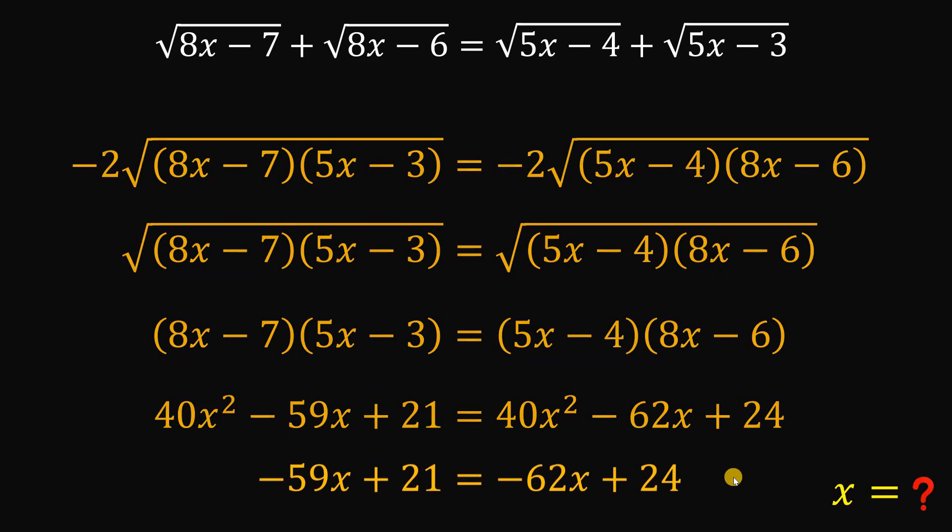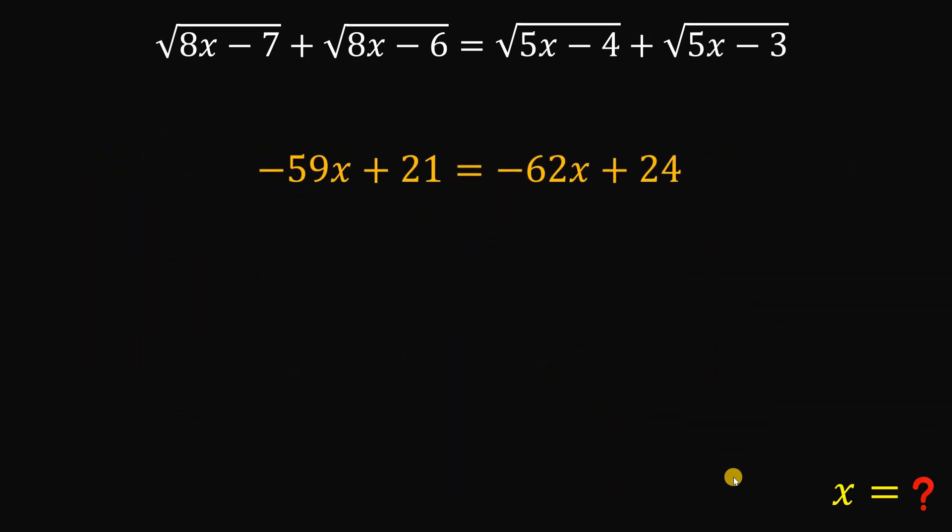Now, we can now solve for the value of x. Rearrange some terms a little bit. Combine similar terms. Negative 59x plus 62x is 3x. And 24 minus 21 is 3. Divide both sides by 3, we get x equals 1.